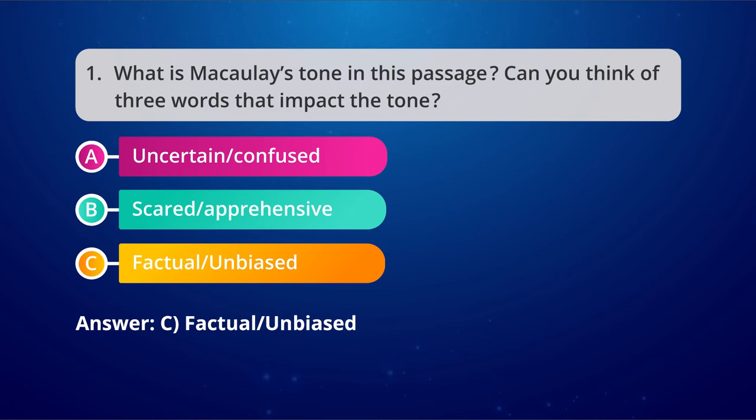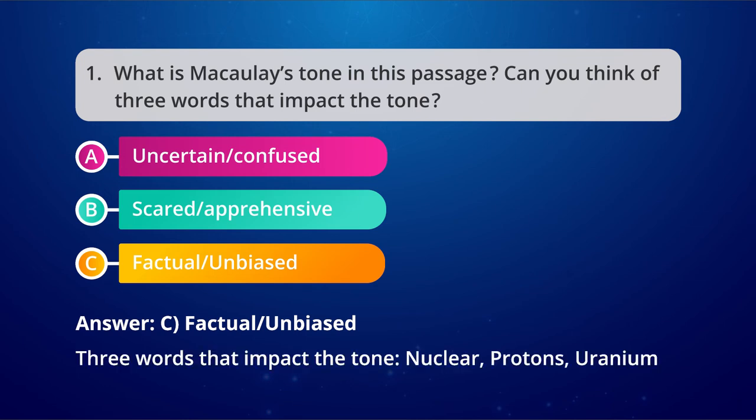This passage gives factual information and is completely unbiased. Three words that impact the tone are: 'nuclear,' 'protons,' and 'uranium.' So this is how we look at any text — topic sentence, main idea, supporting details, purpose of the author, and the tone.